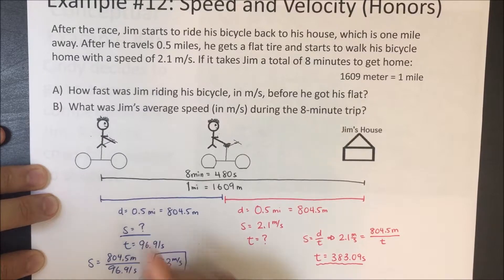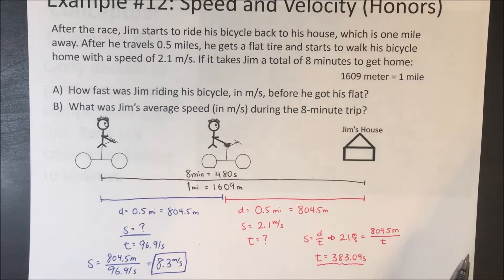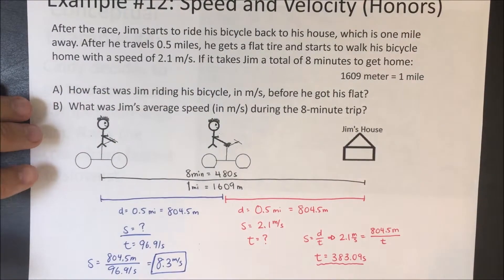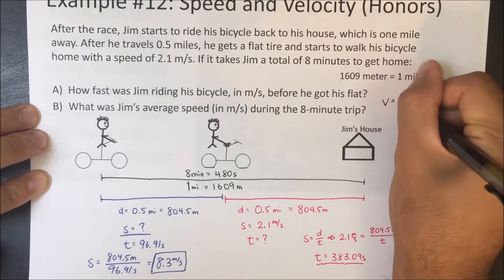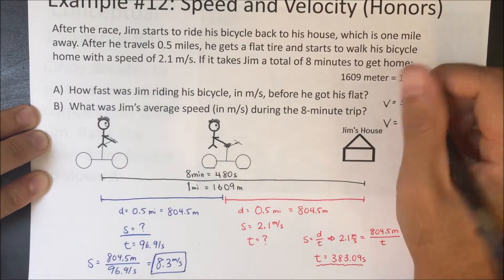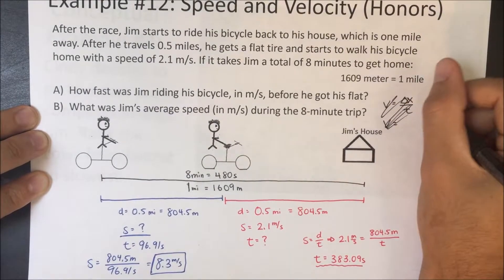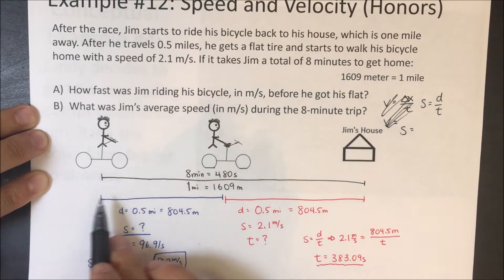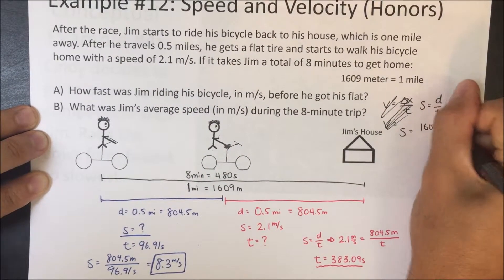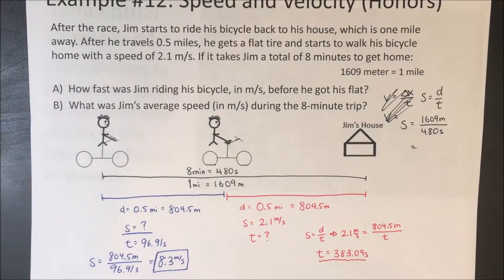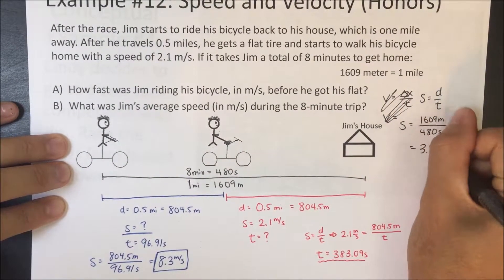It's a lot, but just take your time — it's like a puzzle, find what you can and work from there. Part B asks for Jim's average speed during the 8-minute trip. Speed equals total distance over total time: 1609 meters divided by 480 seconds gives an average speed of 3.35 meters per second.